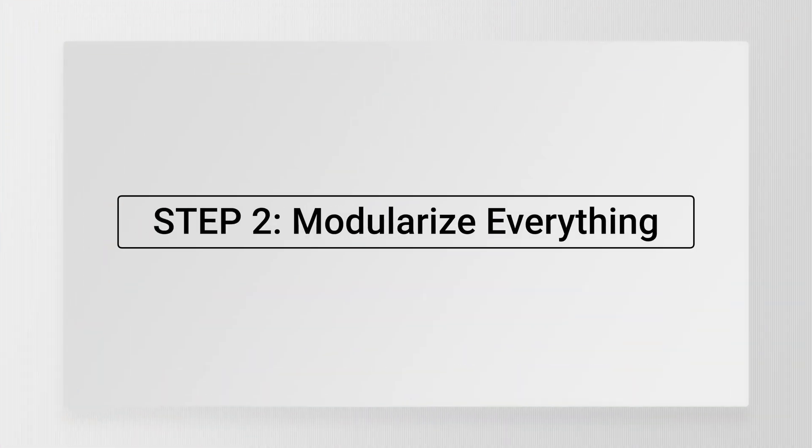So once you get naming and structure under control, the next big step is modularization. What do I mean by that? Most messy projects are messy because everything is crammed together. You've got one giant function block doing everything under the sun, or a program where recipes, equipment, alarms, and user interface are all crammed into the same space. It works — the PLC doesn't care — but it's fragile. One little change in one part of the program and you've suddenly changed something in another part.